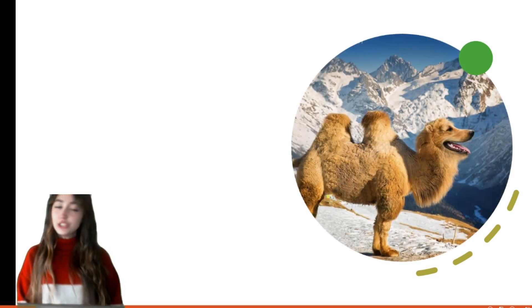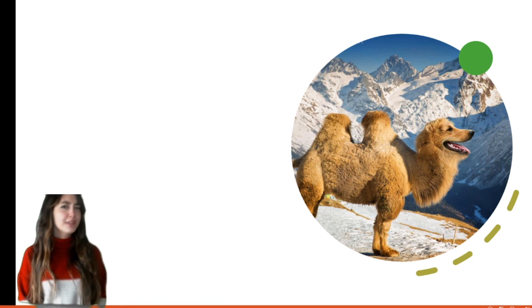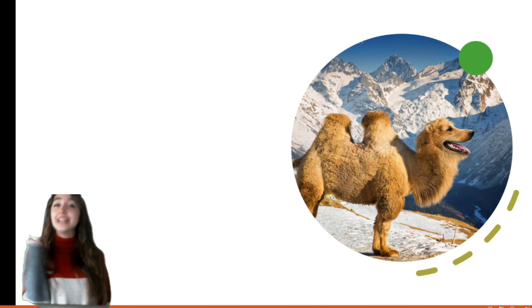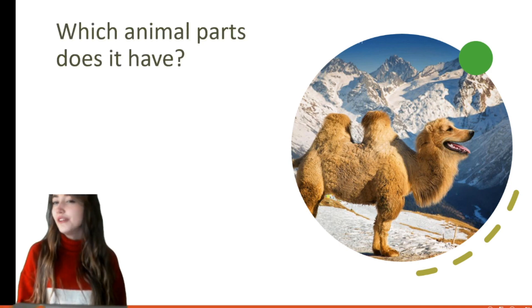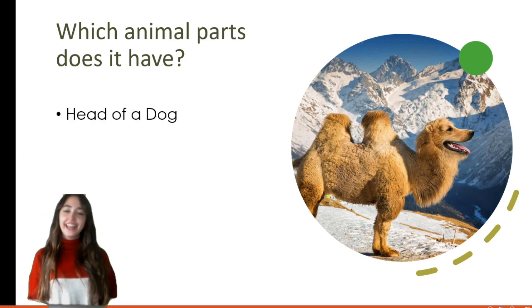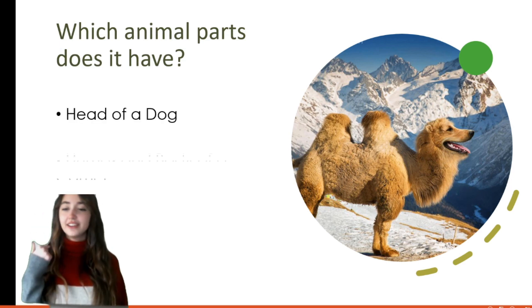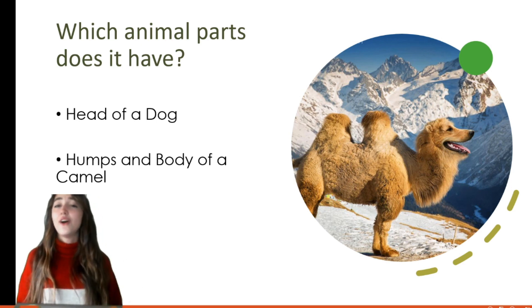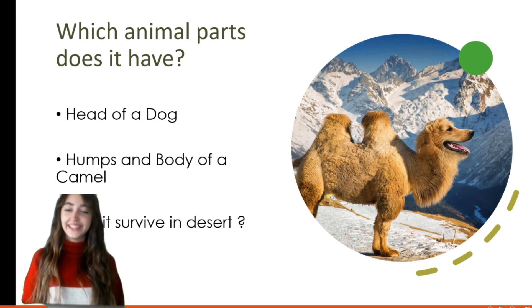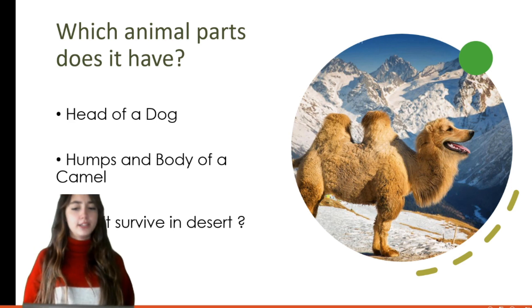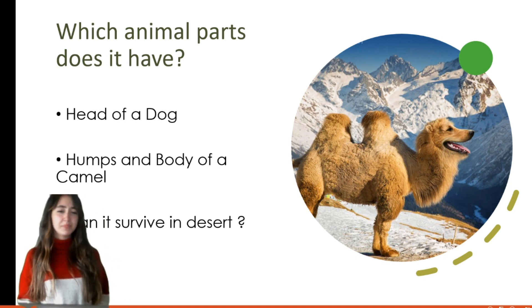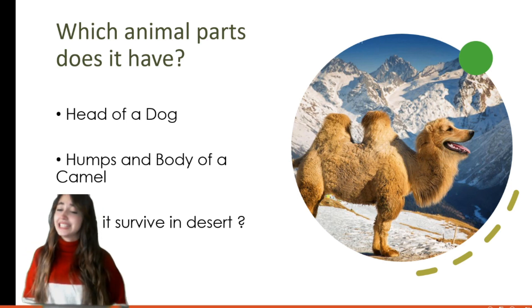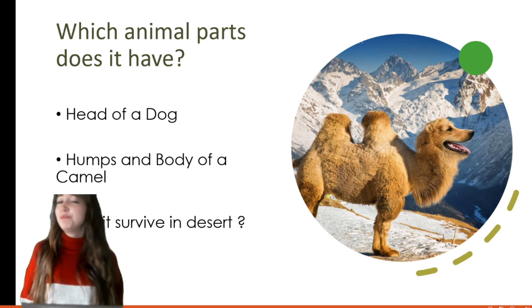Let's continue with the next one. What two animals are mixed up in the picture? Yes — a camel and a dog! Which animal parts does it have? It has the head of a dog and the humps and body of a camel. Can it survive in the desert? Maybe — you can check the background. I think it cannot survive in the desert, but it's up to you.